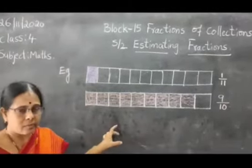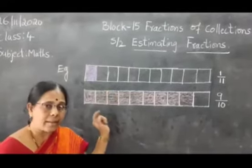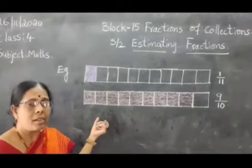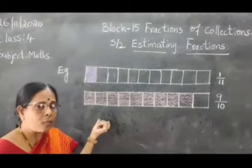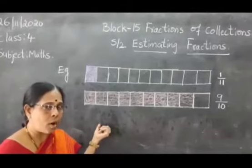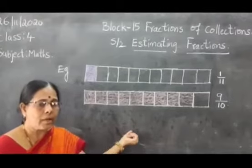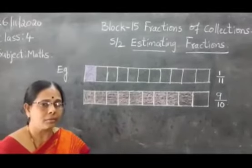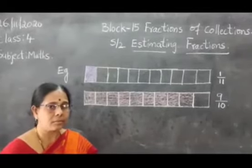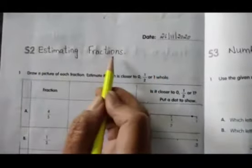Today we will do the workbook. We have to find the estimation and find closer to 1, half, and 0. Here closer to 1, here closer to 1, and here closer to 0. Take it to your workbook. I will show the workbook sums. Date 26-11-2020, estimating fractions.